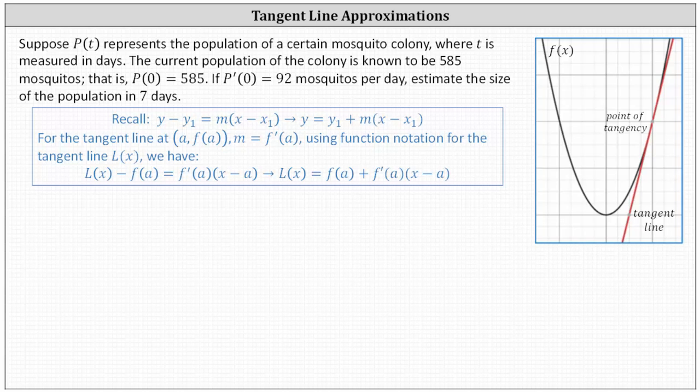Suppose p of t represents the population of a certain mosquito colony where t is measured in days. The current population of the colony is known to be 585 mosquitoes, that is p of zero equals 585. If p prime of zero equals 92 mosquitoes per day, estimate the size of the population in seven days.